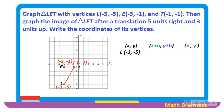Since the translation is 5 units to the right, we are going to add 5 to the x coordinate, and 3 units up, we are going to add 3 to the y coordinate. For L prime: point L has the ordered pair (−3, −5), so −3 + 5 gives us 2, and −5 + 3 gives us −2. Therefore, the x coordinate of L prime is 2 and the y coordinate is −2.